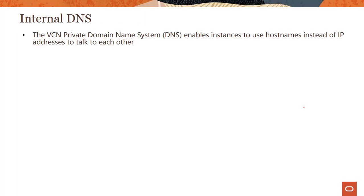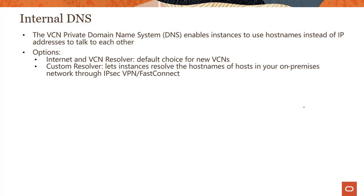So what is internal DNS? The VCN private domain name system, or internal DNS, enables instances to use host names instead of private IP addresses to talk to each other. There are two kinds of options available. One is called the internet and VCN resolver, which is the default choice for new VCNs — if you don't do anything, you would be using this kind of internal DNS resolver.